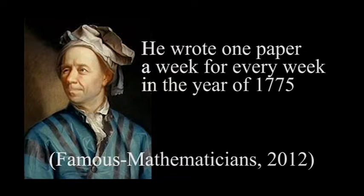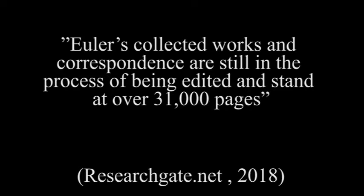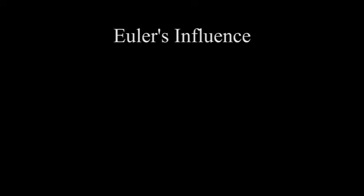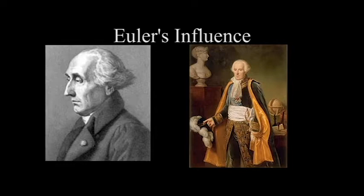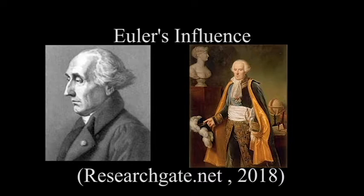Euler spent his last days in Russia. He died of a brain hemorrhage on September 18, 1783. His mathematical prowess made advances by later mathematicians possible. It is accepted by the mathematics community that Euler was the most prolific mathematician of all time. Euler's collected works and correspondence are still in the process of being edited and stand at over 31,000 pages. His overall contributions made possible further advances by later mathematicians, including Joseph-Louis Lagrange and Pierre-Simon Laplace, who were also splendid mathematicians of the late 18th century. It was said by Laplace that all mathematicians were students of Euler.